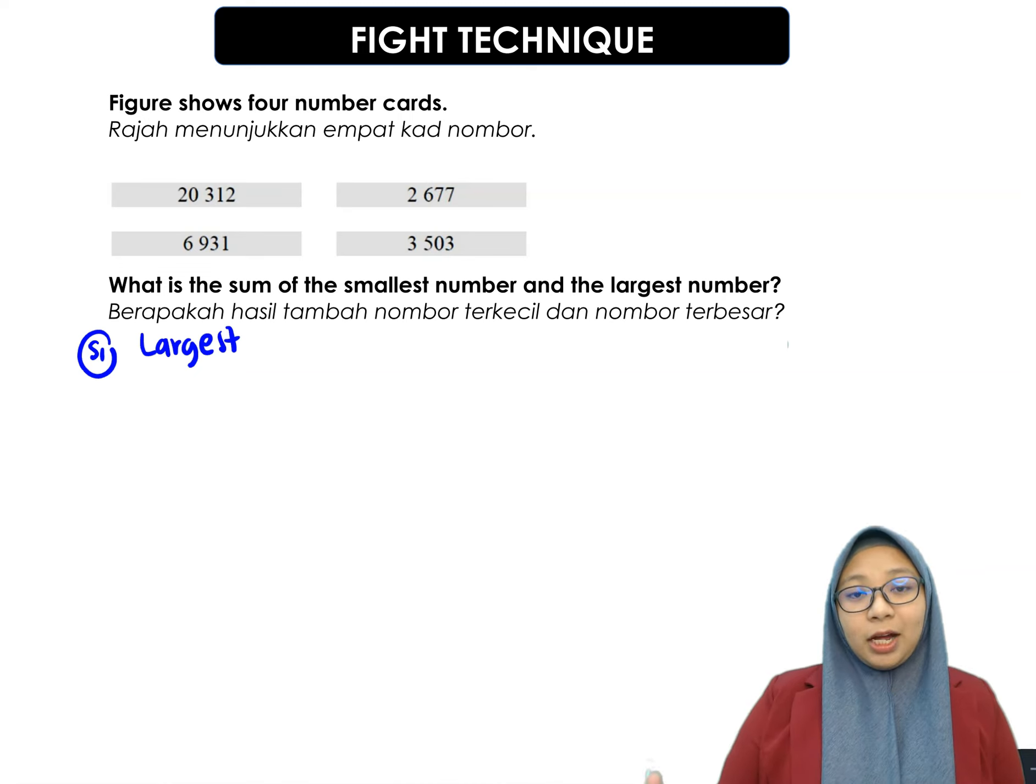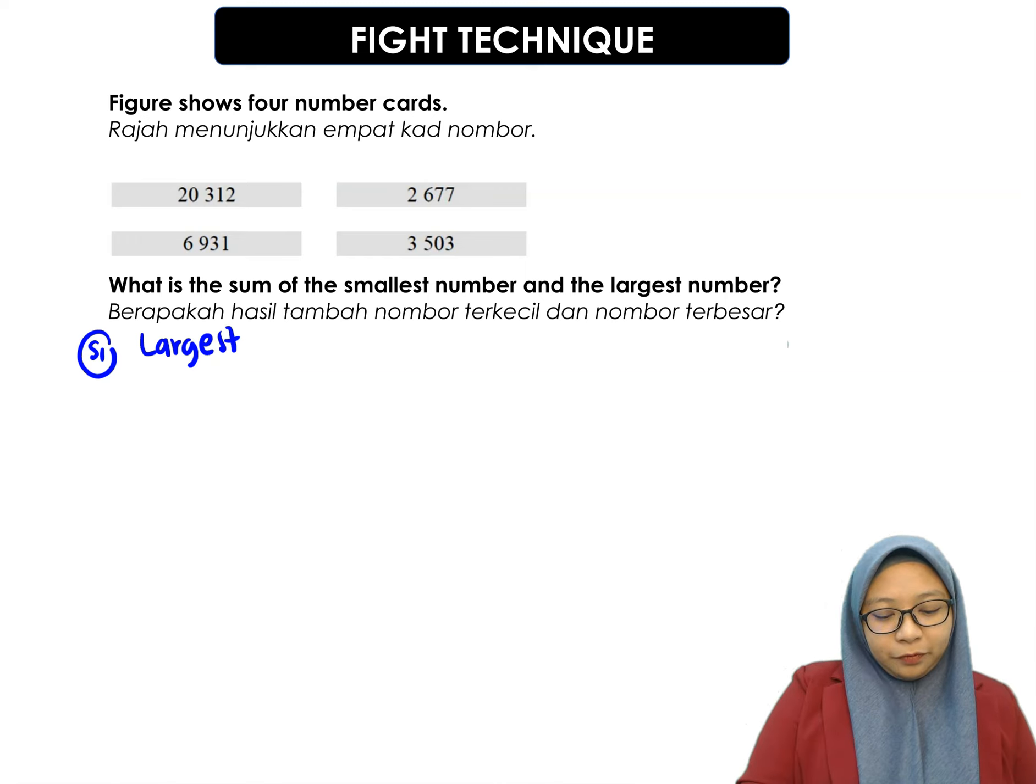So, first, list down all the numbers. Remember, the first one we have 20,312, 2,677, 6,931, and then the last one, 3,503.